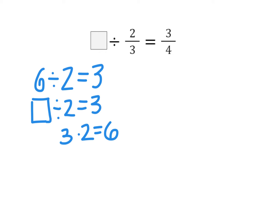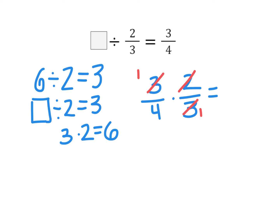We're going to multiply our 3 fourths by our 2 thirds, which is our divisor. A reminder that we can simplify before we multiply. The 3 and the 3 become 1 and 1, and the 2 and the 4 share a factor of 2, so this becomes 1 and 2. When I multiply it out, I end up with 1 times 1 is 1 and 2 times 1 is 2. So my answer is 1 half.